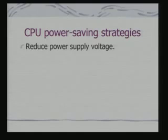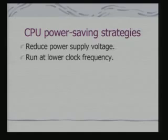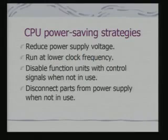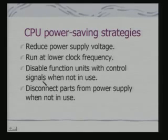How are CPU power saving strategies implemented? First, reduce the power supply voltage — the moment you reduce it, power goes down as shown by the CMOS relationship. Second, run at a lower clock frequency, which also reduces power. Third, disable function units with control signals when not in use — not all units are used for every computation. Fourth, disconnect parts from the power supply when not in use. Disabling stops the clock while disconnecting completely cuts power supply to parts of the architecture.